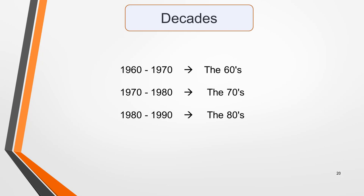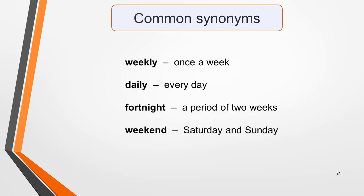Something else to be aware of is how decades are often expressed. For example, the period 1960 to 1970 is often referred to as the 60s, 1970 to 1980 as the 70s, and 1980 to 1990 as the 80s. Finally, learn these common synonyms: 'weekly' means once a week; 'daily' means every day; 'fortnight' is a period of two weeks; and 'weekend' is Saturday and Sunday.